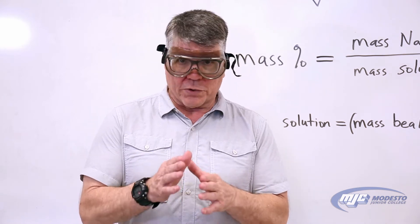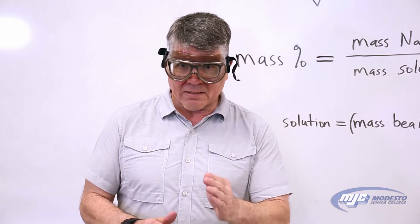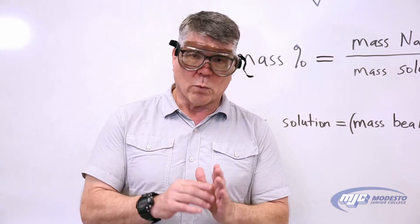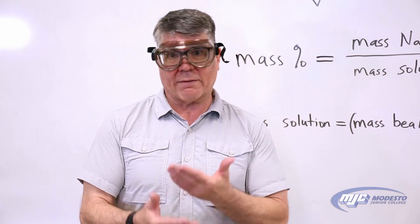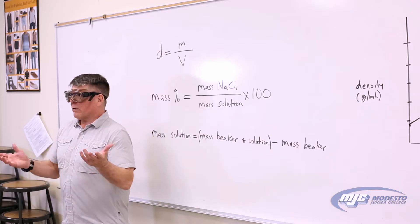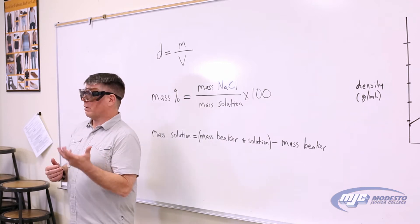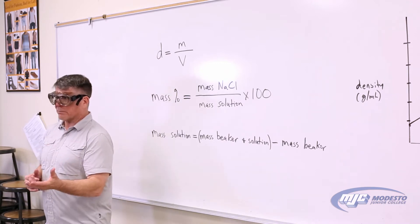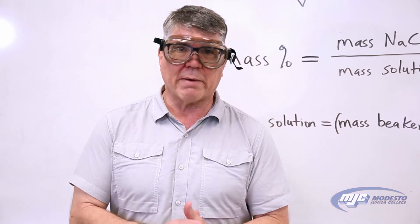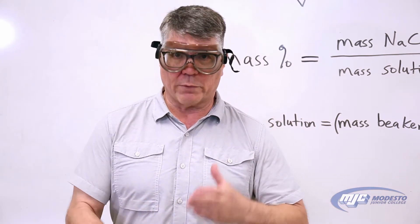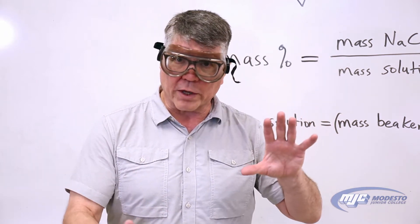In this experiment what you're going to measure is the density of your solutions, because what you're trying to find is the mass percent sodium chloride and those two are related — they have a linear relationship. If I were determining how much lead is in your water I might use something like the absorbance using an atomic absorption spectrophotometer. The idea is that we want a dependence of the variable on the property that we're looking for.